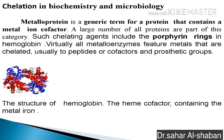What can you find between soybeans and phosphorus? A metal ion cofactor. A large number of all proteins are part of this category — the porphyrin rings in hemoglobin, which band four porphyrin rings to the metal iron to form hemoglobin.